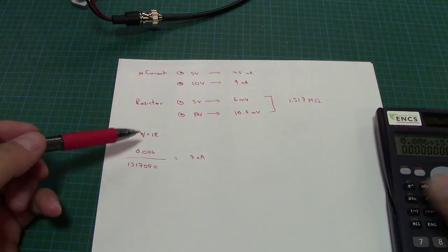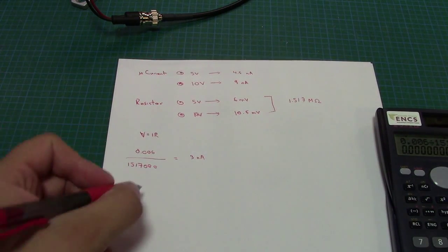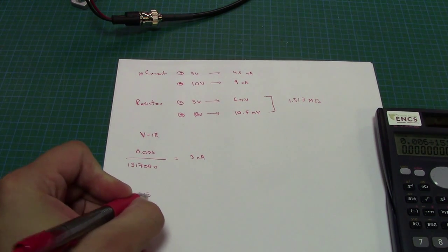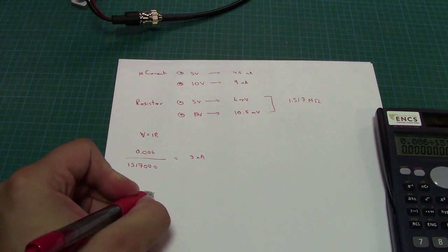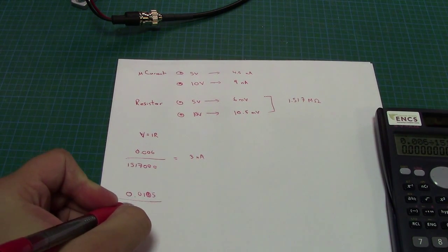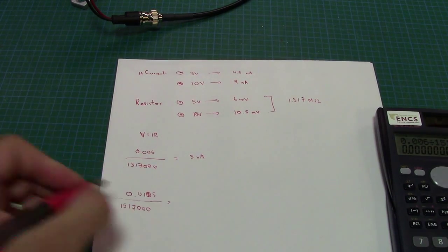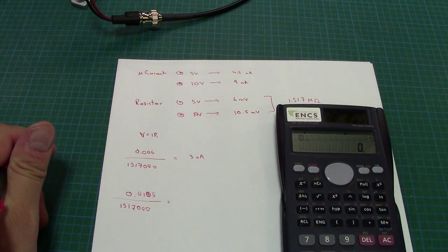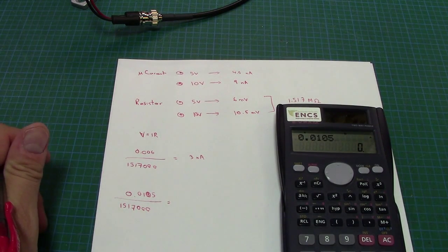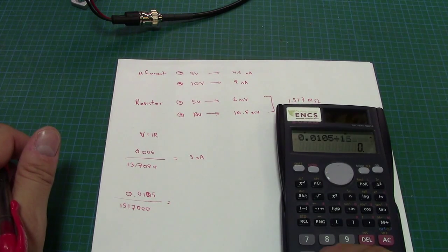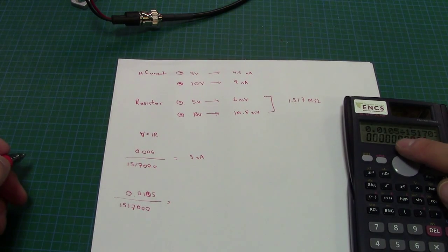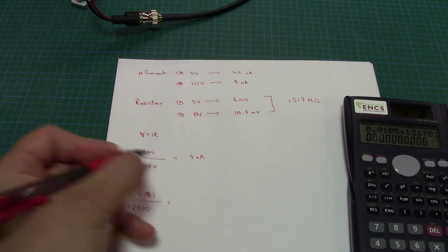Oh that's not too bad. That's not too far off with what we got before. So let's see, now let's do the other one. 0.5 millivolts over again 1,517,000. Tap that all in. And we get 6 nanoamps.